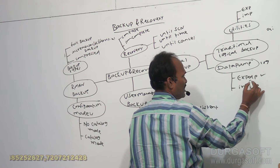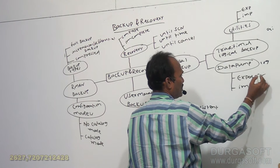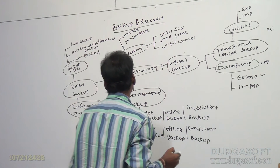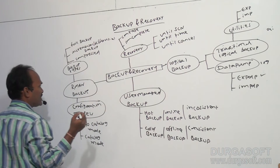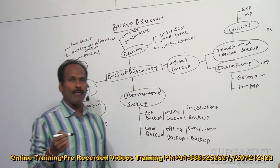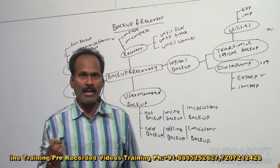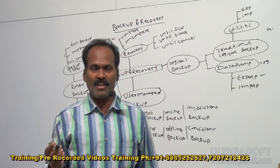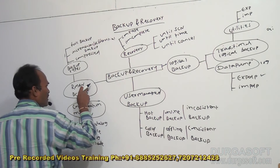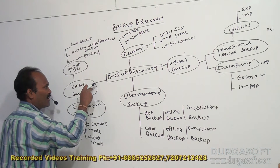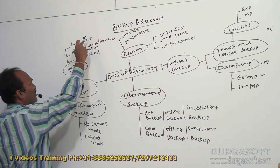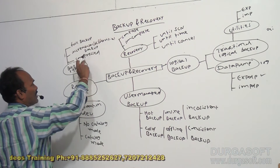EXPDP is data pump export and IMPDP is for importing. This is for exporting and this is for importing. The other category is RMAN backup. RMAN backup is a facility provided by Oracle Corporation. No need to install any other software — during installation of Oracle software, it is automatically installed. It is a built-in tool of Oracle. RMAN backup can be of these types: full backup, incremental, differential, compressed, or cumulative backup.